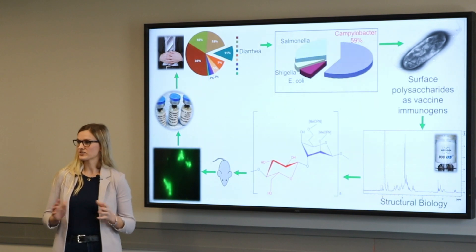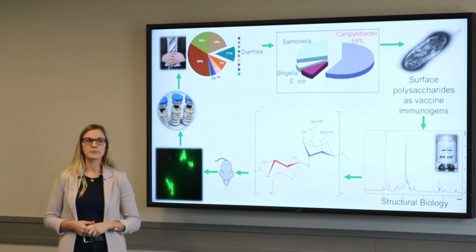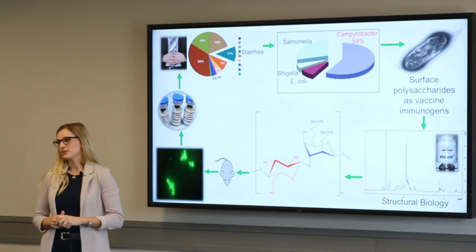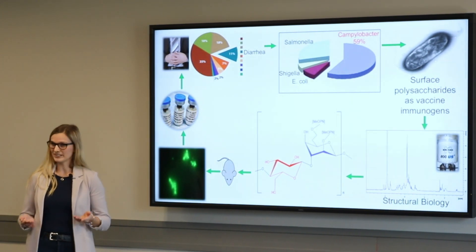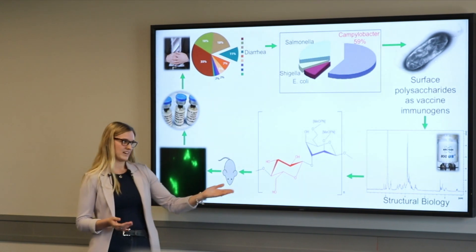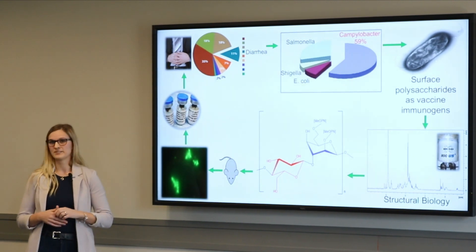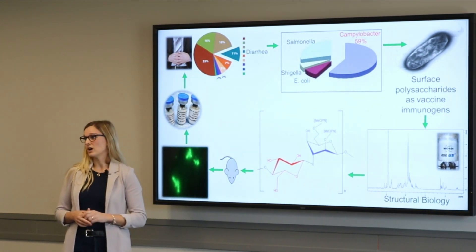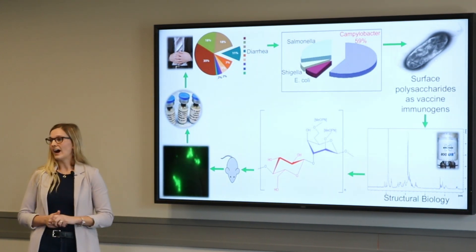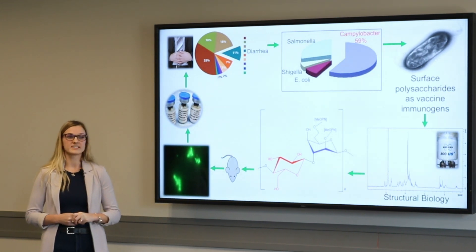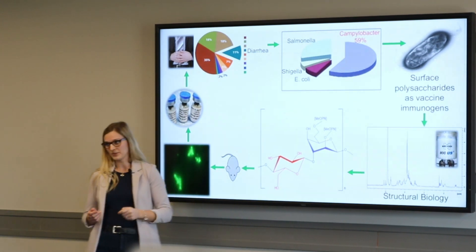I extract the sugars and do a variety of analytical tests to determine their structure. One instrument that I frequently use is called NMR — it is like MRI, but for small molecules. The data that I get from NMR is very complex, but I do learn a lot of structural information from it. Full characterization of a polysaccharide usually takes one to two years. I have found that Campylobacter creates complex and unusual sugars that are not found in other types of bacteria.